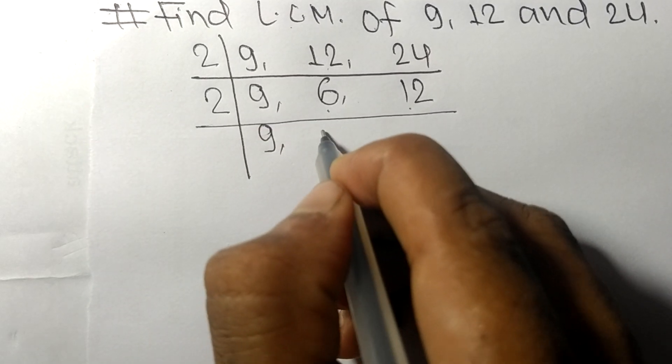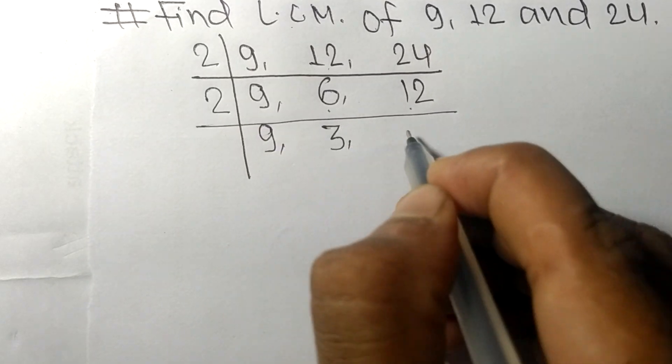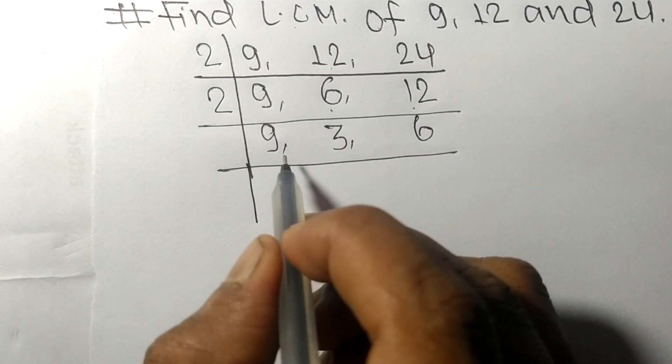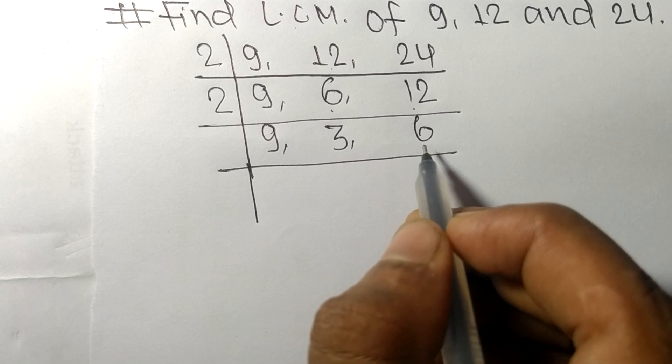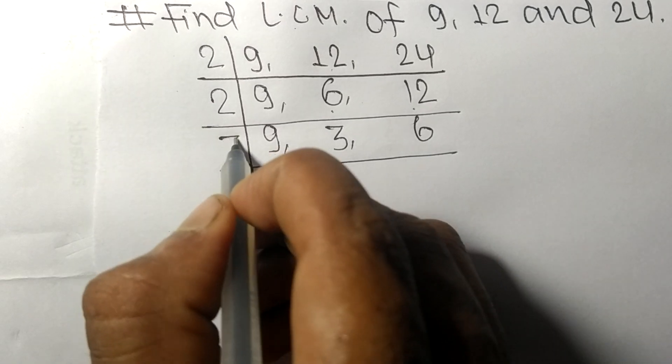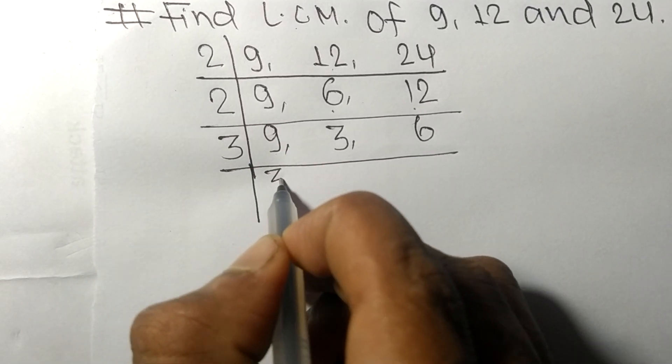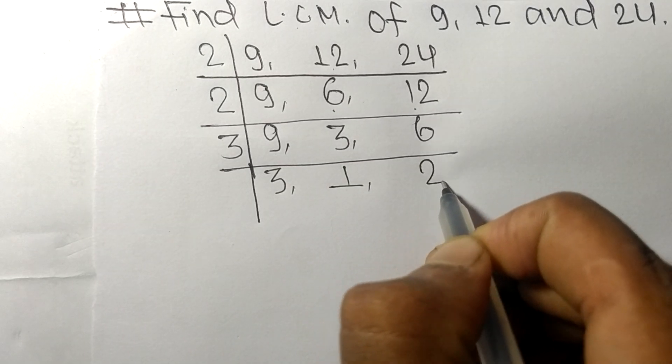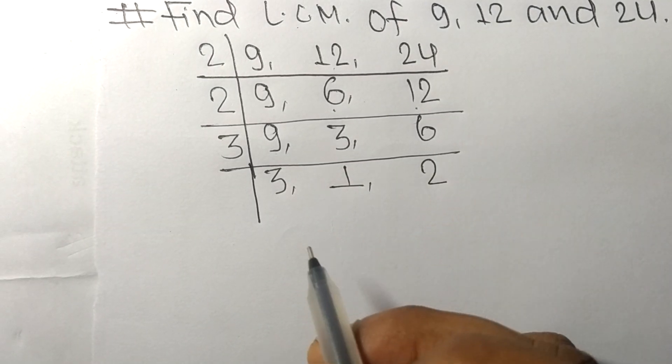2 times 3 equals 6, 2 times 6 equals 12. Now these numbers 9, 3, and 6 are divisible by 3. 3 times 3 equals 9, 3 times 1 equals 3, 3 times 2 equals 6.